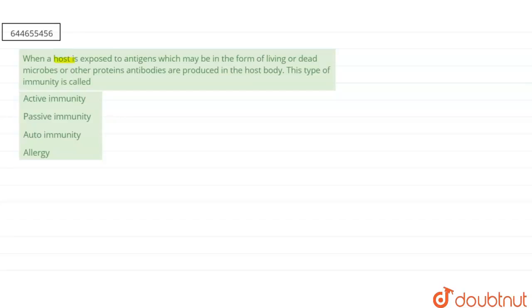The question is: when a host is exposed to antigens which may be in the form of living or dead microbes or other proteins, antibodies are produced in the host body. This type of immunity is called: first is active immunity,